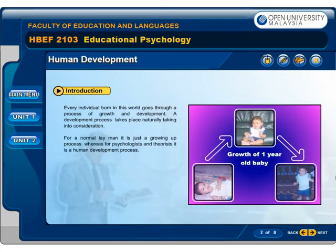Every individual born in this world goes through a process of growth and development. A development process takes place naturally. For a normal layman, it is just a growing up process of an individual, whereas for psychologists and theorists, it is a human development process.